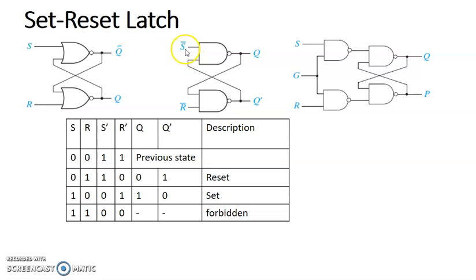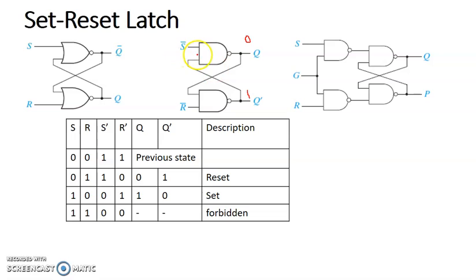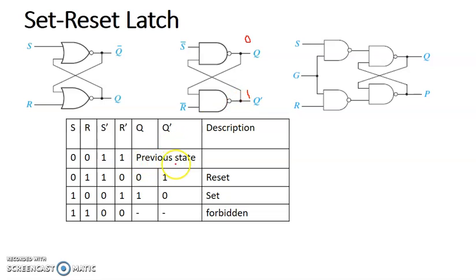Now when S-bar is 1, what output do we get? We consider some output across Q and Q-bar as the previous output. Suppose this is 0 and 1 in the previous state. When S-bar is 1 and the previous stage is 1: 1, 1, the output is 0. So 0 is the input for this and R-bar is 1 — for 1,1, working: 0, 1, the output is 1. We get the same state — earlier state was also 0, 1. Even with input 1, 1 for S-bar and R-bar, we get the same state. This condition is satisfied.